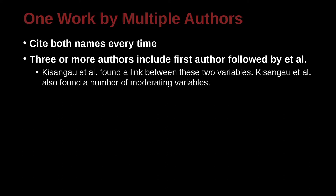However, in MLA, the first time you cite, you don't need to write them all out. The very first time in your paper, you can use 'et al.' So in this example, Nzanggu et al. found a link between these two variables. Nzanggu et al. also found a number of moderating variables. So first time is okay, same as second time. But in APA, that's a different rule.